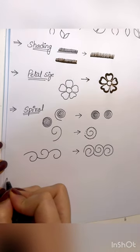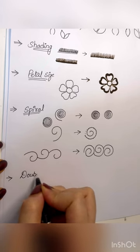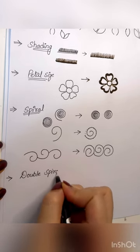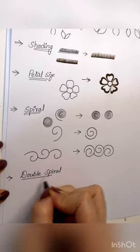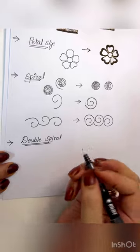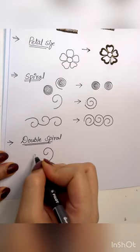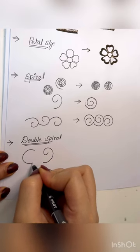Last but not the least, double spiral. Again I repeat the same thing. Whenever you start your spiral, don't create like this. Instead go in a circular way.